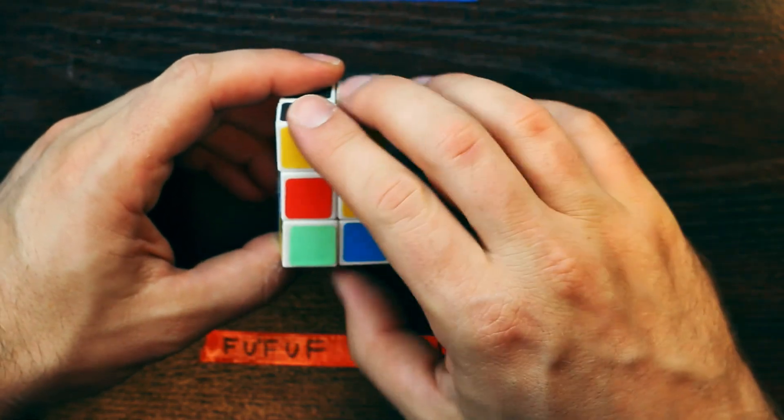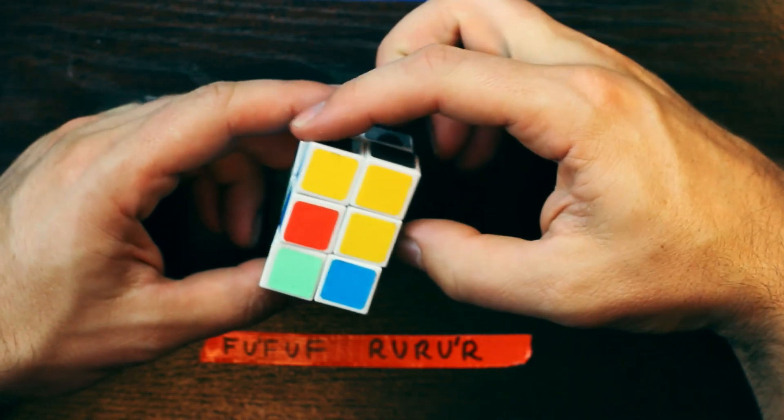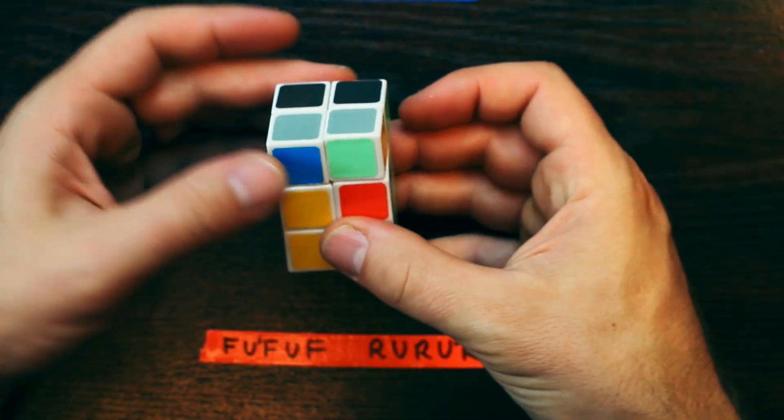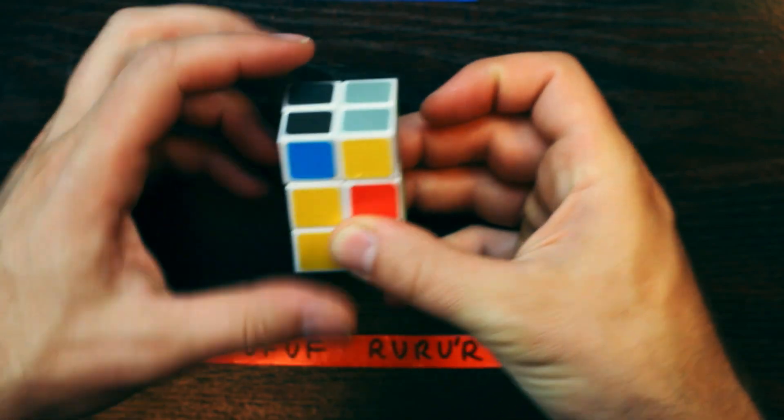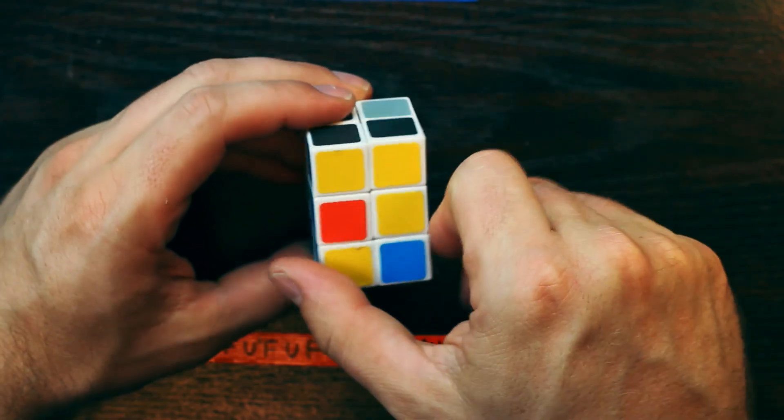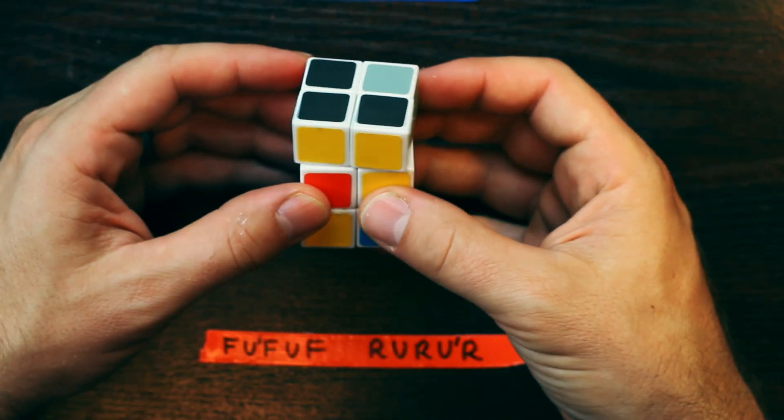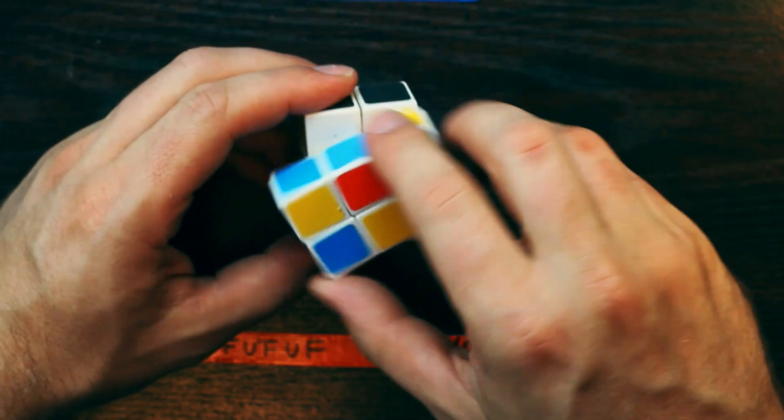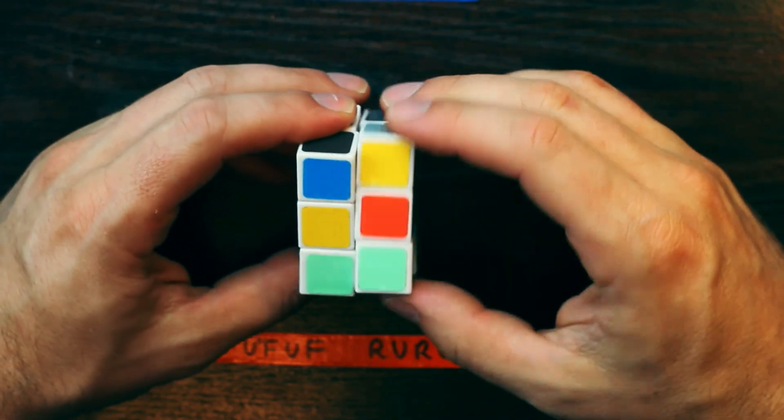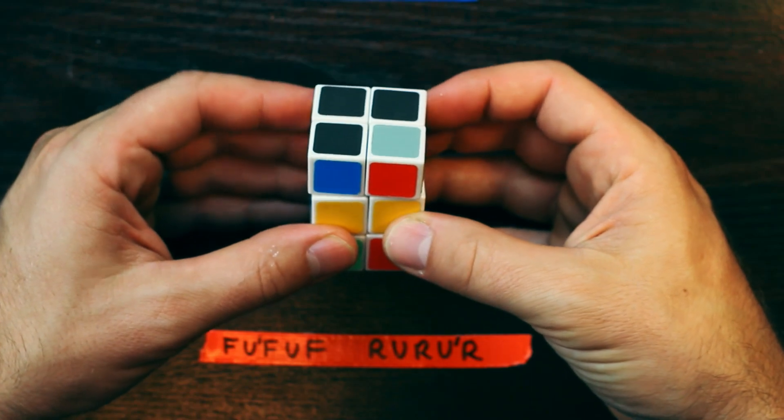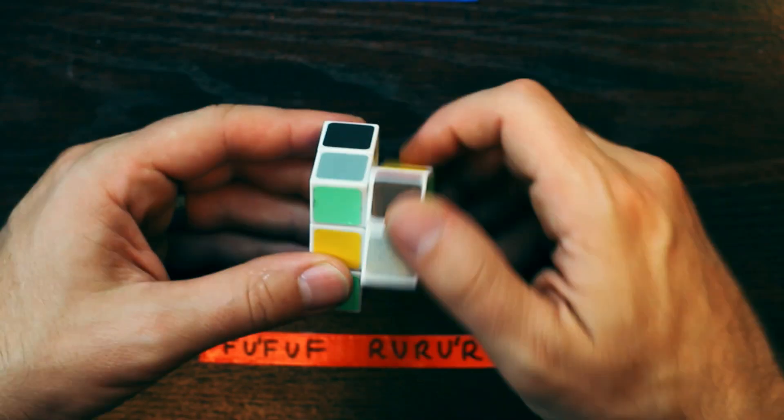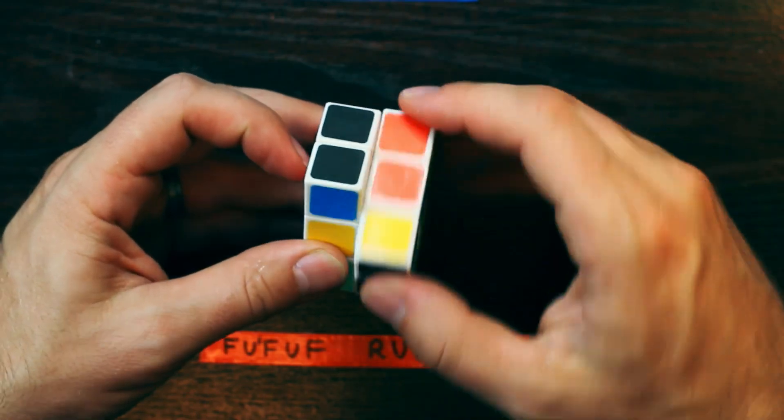So it's just front, front one turn, up counterclockwise. Front one turn, up clockwise. Front. And then right, up clockwise, right, up counter, right.